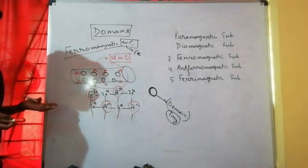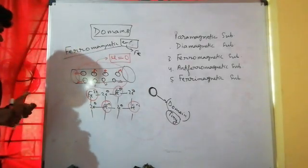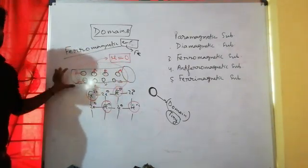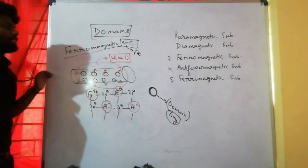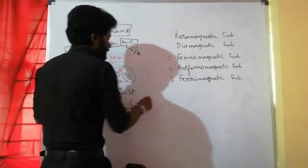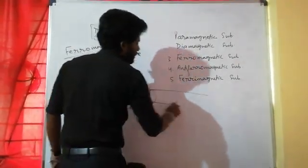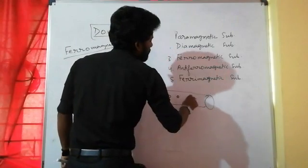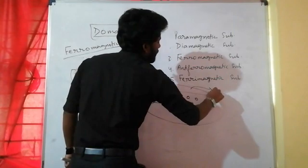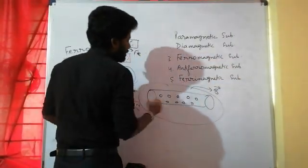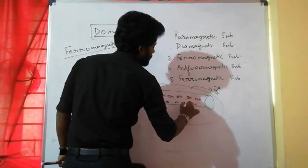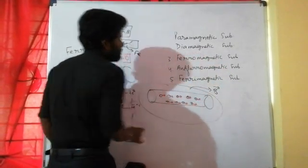But if we keep this substance in a magnetic field, then all domains will be oriented in the same direction — in the direction of the applied magnetic field. So in the presence of a magnetic field, all domains align in the same direction.